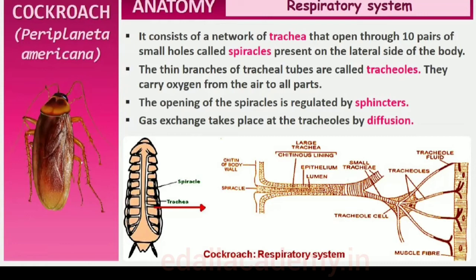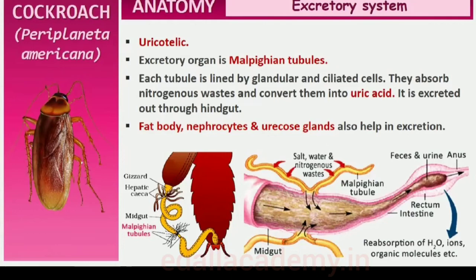Excretion is performed by Malpighian tubules. Each tubule is lined by glandular and ciliated cells. They absorb nitrogenous waste products and convert them into uric acid which is excreted out through the hindgut. Therefore, this insect is called uricotelic. In addition, the fat body, nephrocytes and uricose glands also help in excretion.